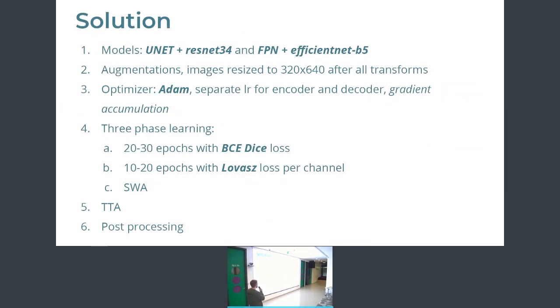So we used well-known architectures such as UNET and FPN. UNET was with ResNet-34 encoder and FPN with EfficientNet B5 encoder. So we learned using three phases.